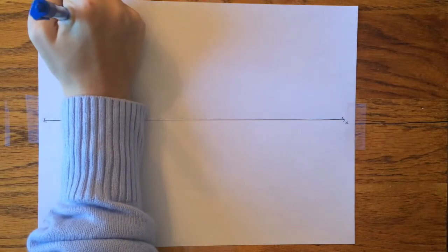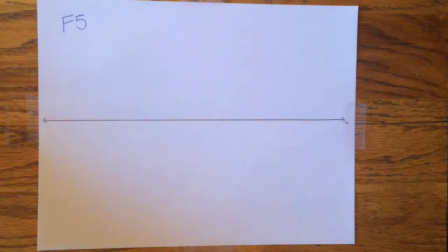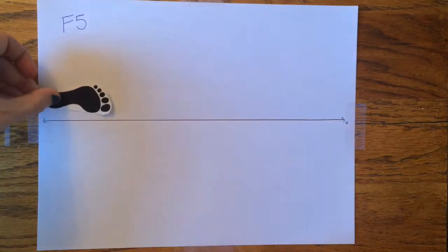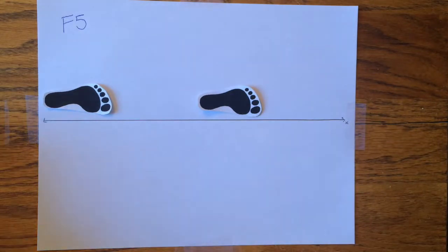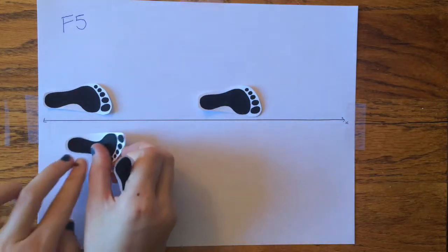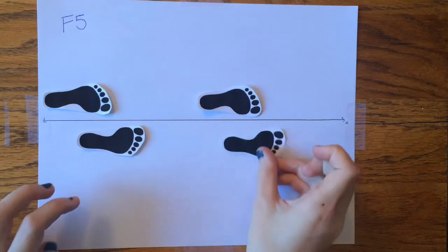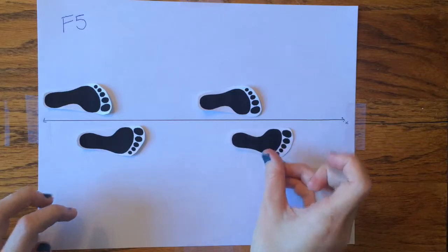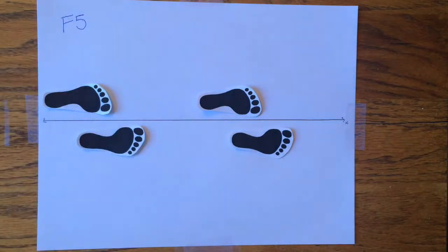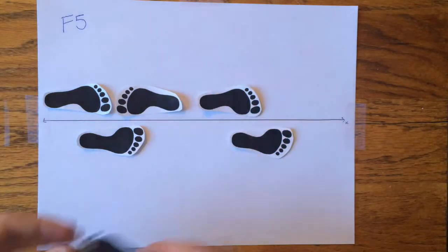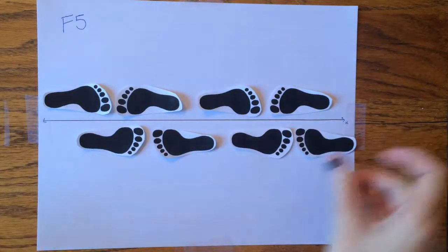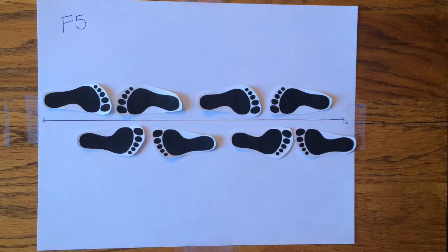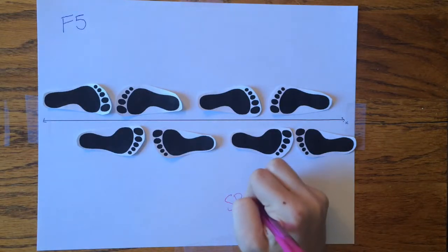The next pattern, F5, results from translation, glide reflection, and vertical reflection. First, the original image is translated repeatedly along the x-axis. Then, each image undergoes a glide reflection. Finally, all the images are then vertically reflected. The pattern that results from F5 is also referred to as a spinning slide.